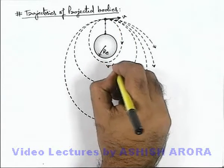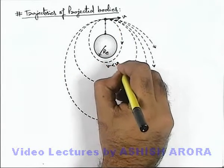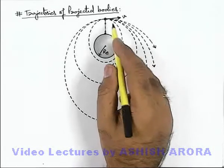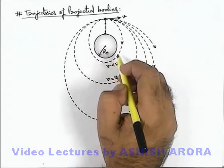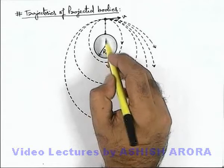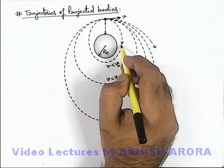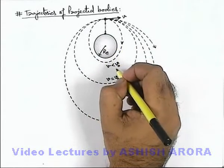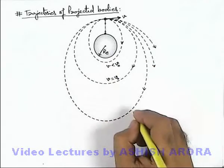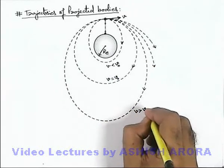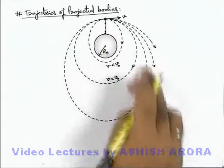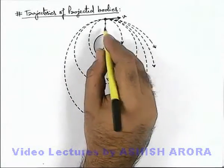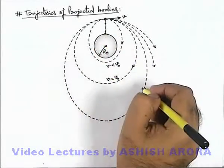If the speed is less than the orbital speed required for circular motion, the body will follow an elliptical trajectory with Earth's centre located at the farthest focus of the ellipse. If the speed is more than v₀, or greater than the orbital speed, the outer ellipse is obtained and Earth's centre will be located at the nearest focus of this ellipse.